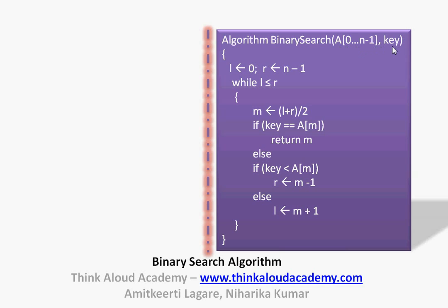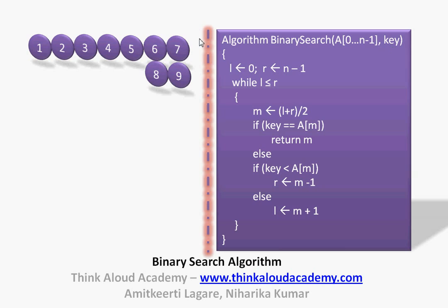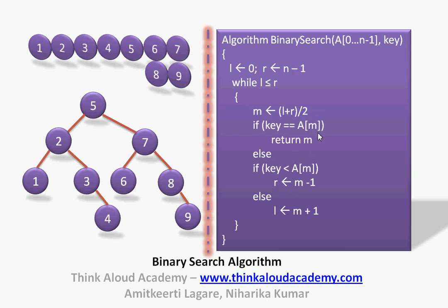Now this is the algorithm for binary search. It takes two parameters: the array of elements, and the key we are trying to search. We initialize L, the lower bound, as 0 — representing the index of the first element — and R, the upper bound, as n minus 1. We then check while L is less than or equal to R and continue the while loop until we either find the element or we don't. One way to analyze this algorithm is to represent it as a tree, where the root is the middle element, and subsequent middle elements form child nodes.